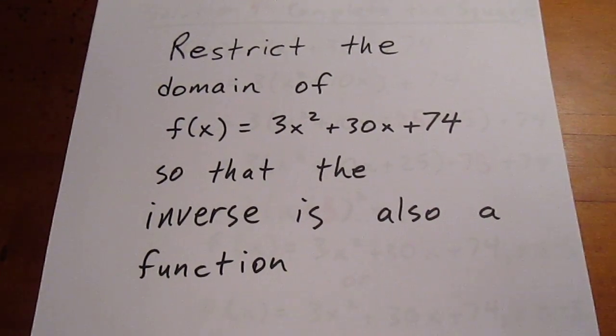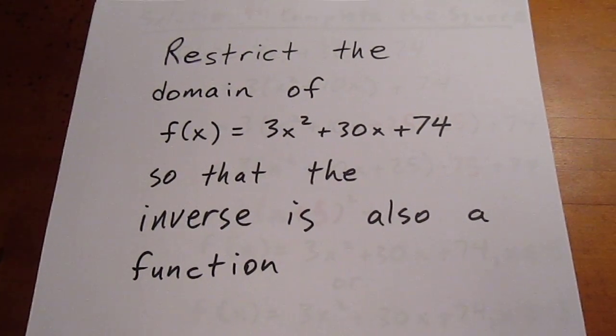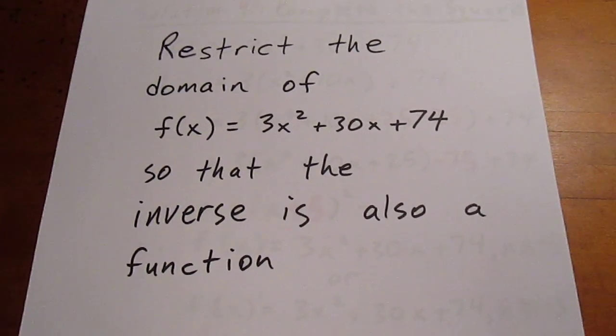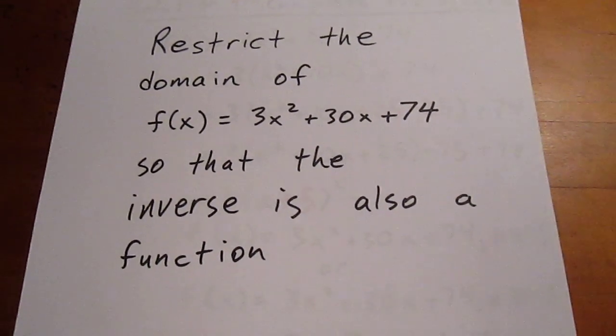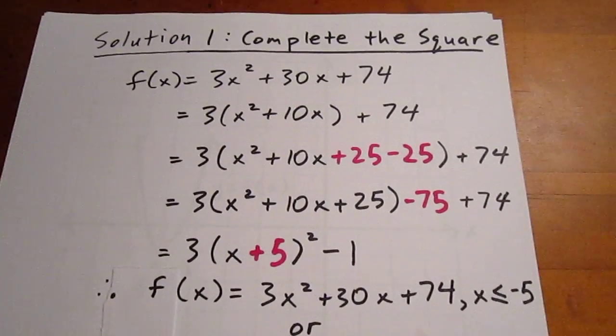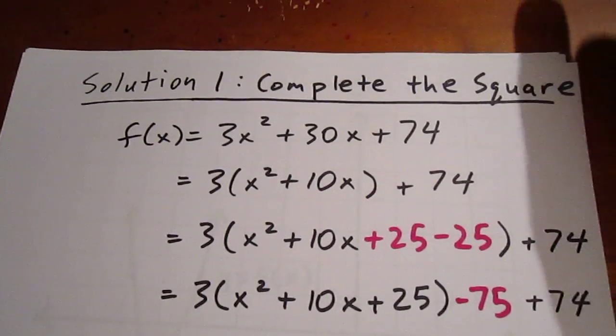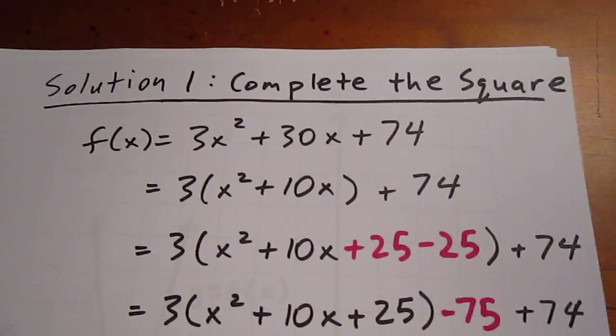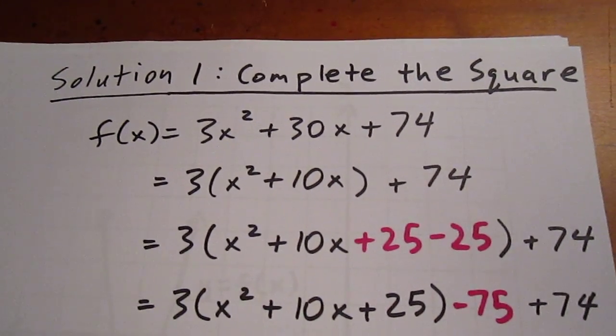Our next question asks us to restrict the domain of f(x) = 3x² + 30x + 74 so that the inverse is also a function. We should either complete the square or use partial factoring to get the expression in vertex form.